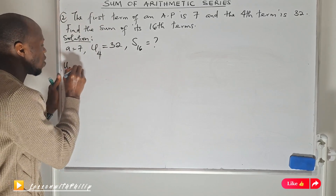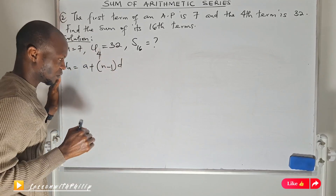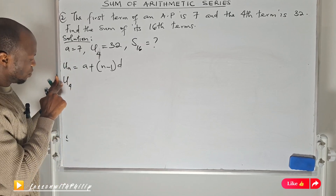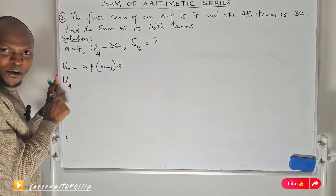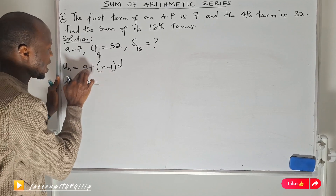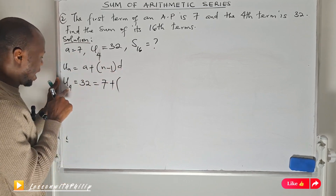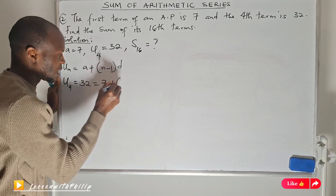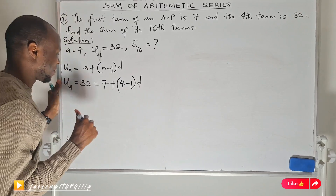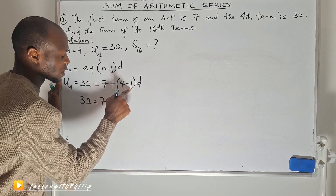Since I know the first term, I can calculate the common difference. The nth term of an AP is: a plus n minus 1 times common difference. Since I'm given the fourth term as 32, I substitute: 32 equals 7 plus 4 minus 1 times common difference, which gives 32 equals 7 plus 3d.